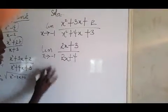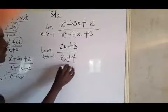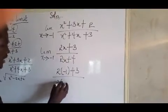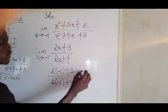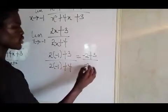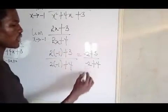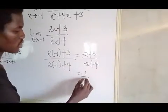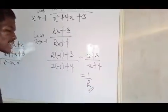And that would be anywhere you see x, you put minus 1. And that would be 2 open bracket minus 1 plus 3 all over 2 open bracket minus 1 plus 4. 2 times minus 1 is minus 2 plus 3 over minus 2 plus 4. Minus 2 plus 3 will give you 1 over minus 2 plus 4 will give you 2. And that would be our final answer.